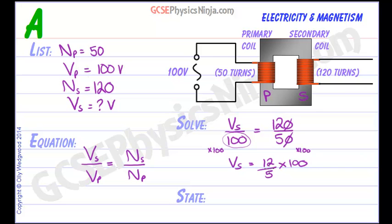A bit more simplification. I can treat that as over 1 so I can cancel the 5: 5 into 5 goes once, 5 into 100 goes 20 times. So finally, our secondary voltage would be 240.